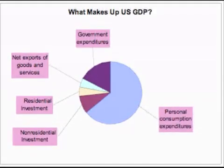The third component of GDP is government spending. Approximately 20% of the US gross domestic product is government spending — that's a huge number. Since such a large percentage of GDP is government spending, the government can increase or decrease the GDP by changing how much it spends. If inflation is a concern, it can reduce GDP by cutting its own spending; if unemployment is a concern, it can increase GDP by increasing spending.